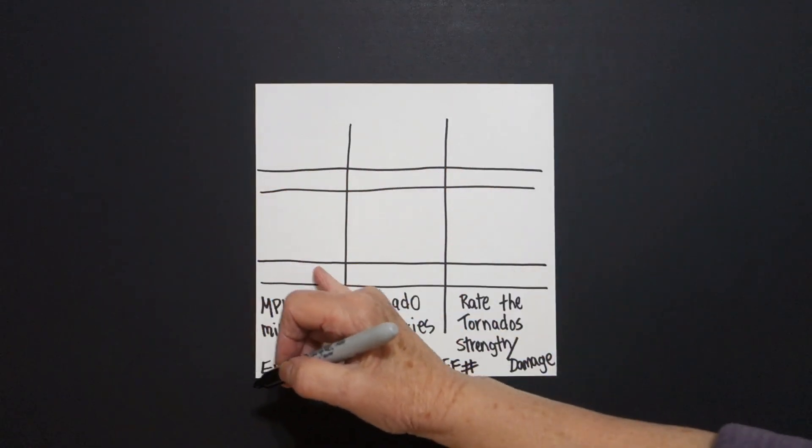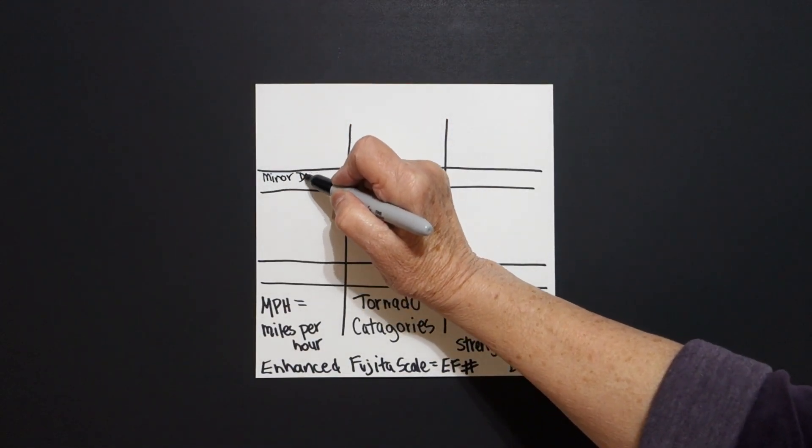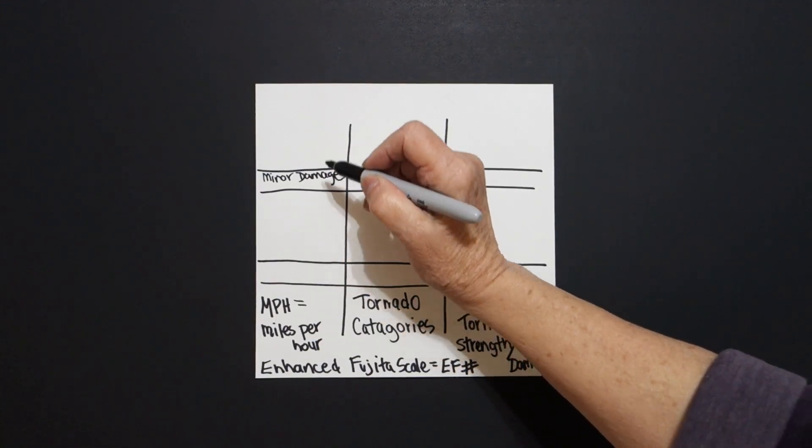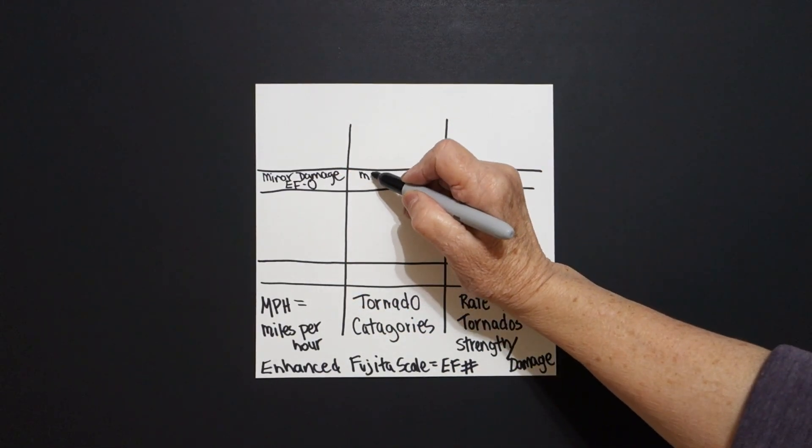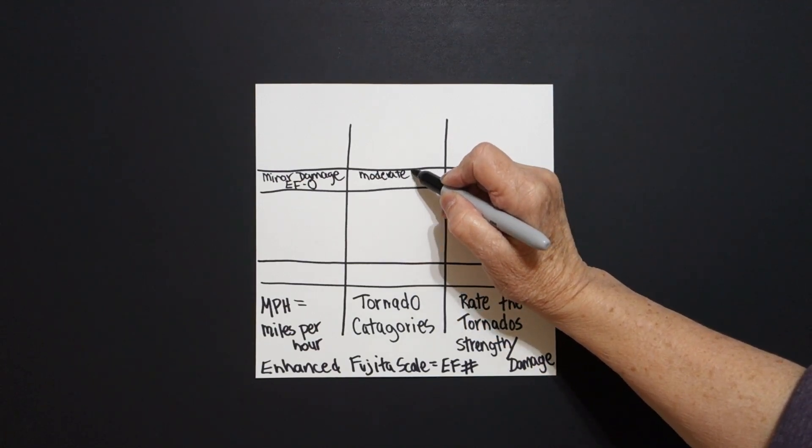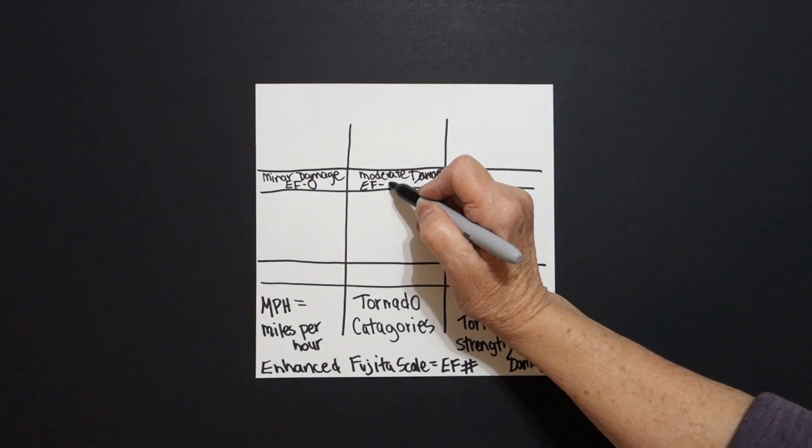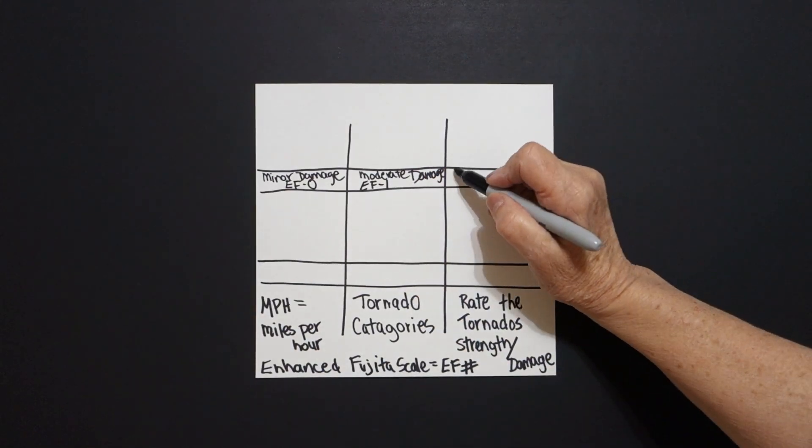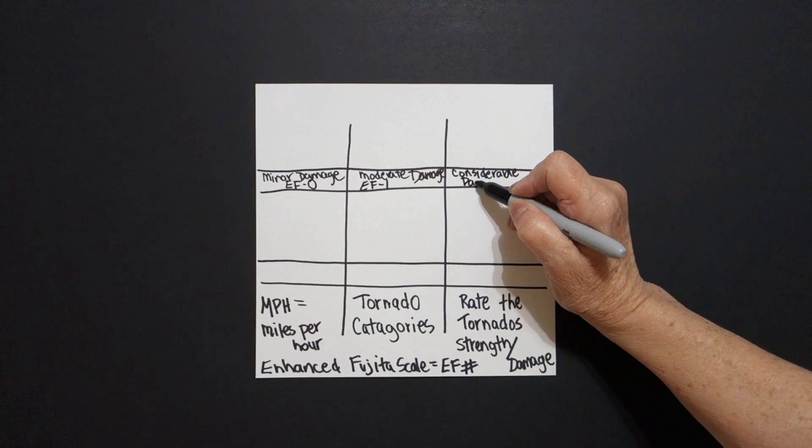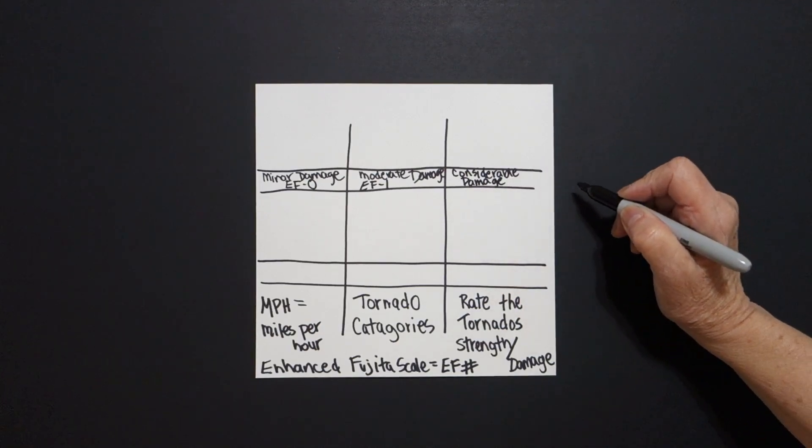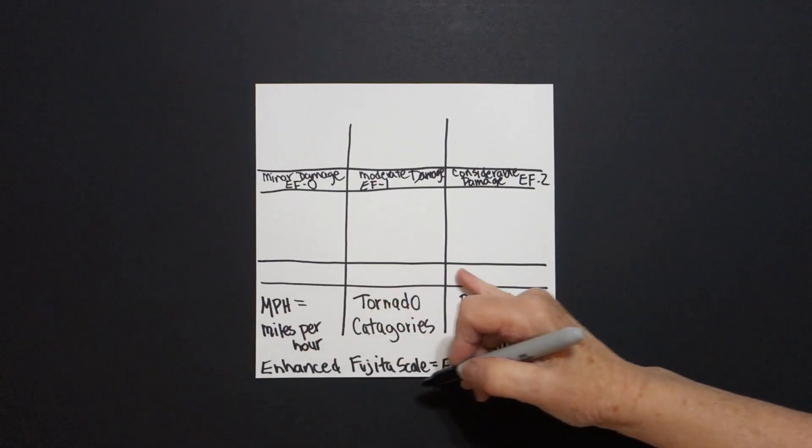Alright, we're going to fill in the skinny mini lines first, before we even draw. So if you are experiencing minor damage from a tornado, that is called EF0. If you are experiencing moderate damage from a tornado, that is called an EF1. If you have considerable damage from a tornado, that becomes an EF2. Okay, now the second row.